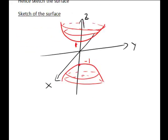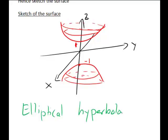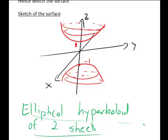What is the actual name of this surface? Because the horizontal cross-sections where the surface exists are ellipses, it's elliptical. Because the vertical cross-sections are hyperbolas, it's an elliptical hyperboloid. And because this hyperboloid is in two separate parts, it is specifically an elliptical hyperboloid of two sheets.